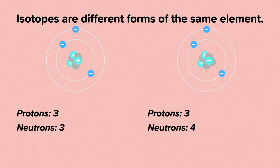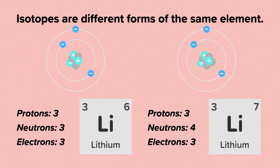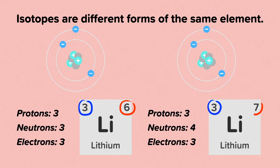Atoms have no overall charge, so they will both have the same number of electrons as they have protons. They have the same number of protons so they are the same element and they will have the same atomic number. But they have different numbers of neutrons so they will have a different mass number.